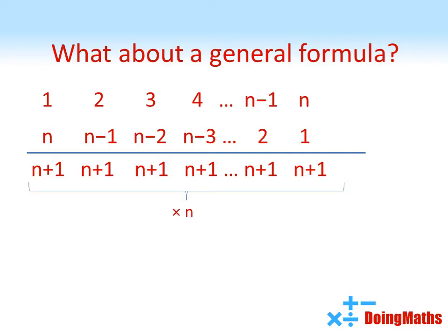We've got n of those. But as before, if we multiply them together, we'd have a number that's twice as big as what we're looking for. So our final formula is going to be half of n times n plus 1.